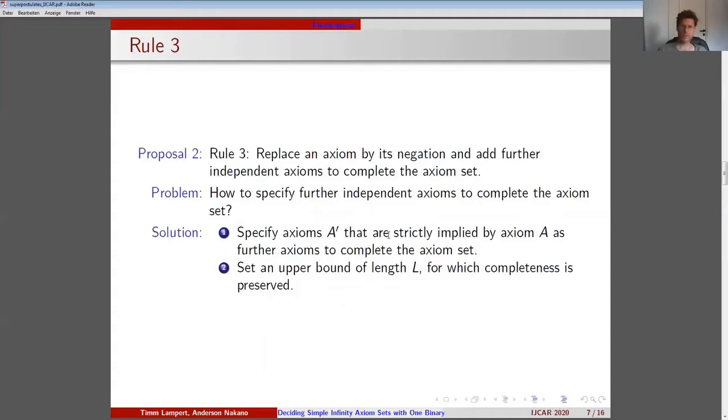So the problem is how to specify further independent axioms to complete the axiom set. We solve this problem by the following two devices. First, specify axioms A' that are strictly implied by axiom A as further axioms to complete the axiom set from replacing A with non-A and S. Second, set an upper bound of length L for which completeness is preserved.